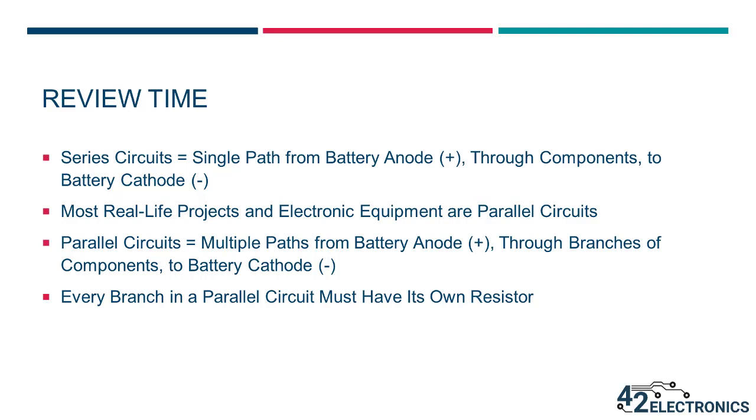Most projects you would build or electronic equipment you use in everyday life is built as a parallel circuit. Parallel circuits have multiple paths from the battery anode to the battery cathode, and the current passes through each branch equally, powering each branch. Because each branch receives equal current, it's critical that every branch contain a resistor to slow the flow of the current to the LED and battery.